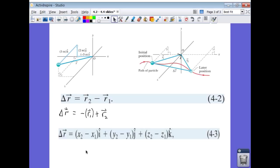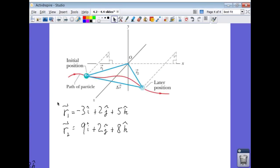Let's look at an example. All right, so let's use the same coordinates for our initial position that we had before, negative 3, 2, 5. And we're going to move from that position in space to our new position in space, r2, which is described by the coordinates 9 in the x, 2 in the y, and 8 in the z.